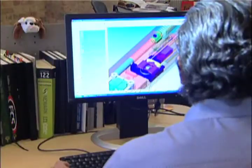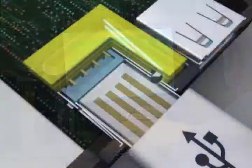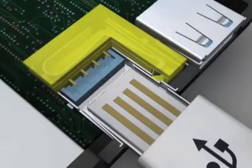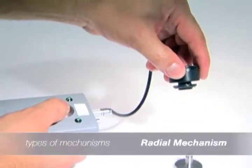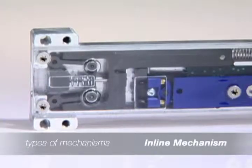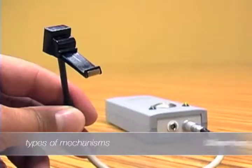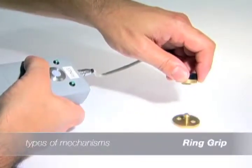TZ has developed a broad range of intelligent fastening mechanism families, each with their own inherent properties that make them suitable for certain practical applications. Examples are the radial mechanism, the inline mechanism, the overhang clip, and the ring grip.